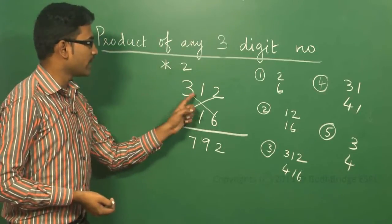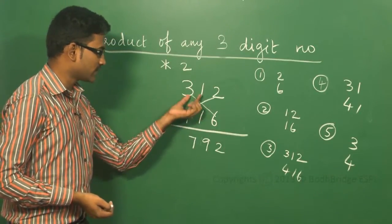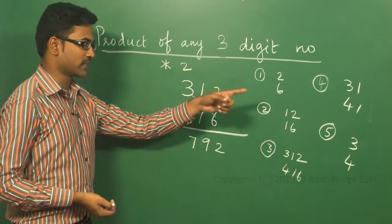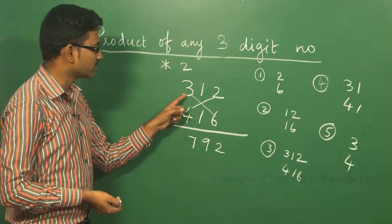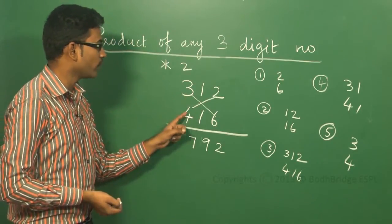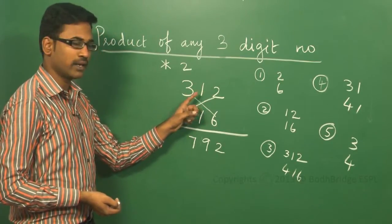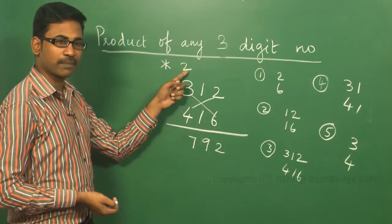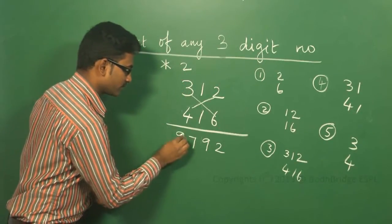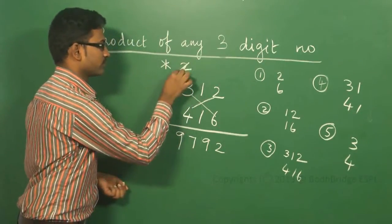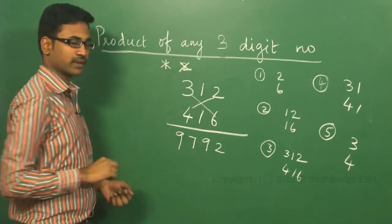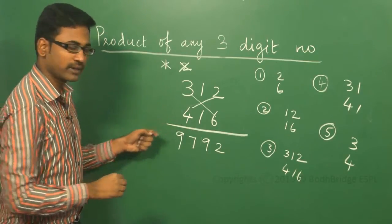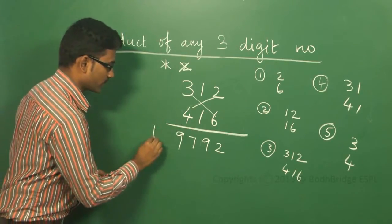The fourth step involves 3, 1 and 4, 1 — two columns to multiply: 3 into 1 plus 4 into 1 is 3 plus 4, which is 7. Plus carry 2 gives 9. The last step is 3 into 4, which is 12.